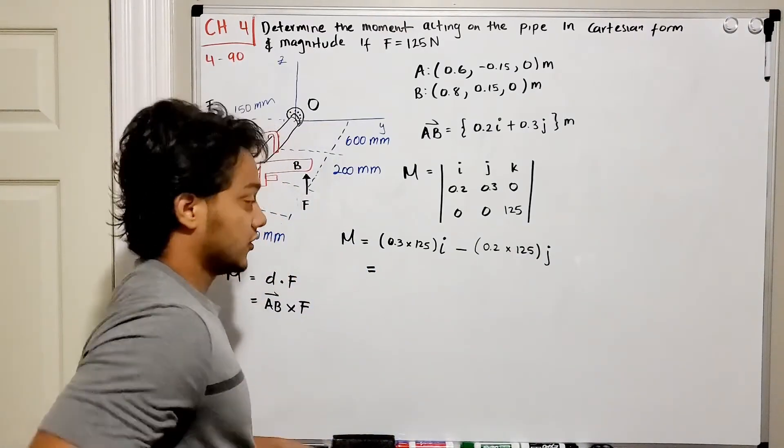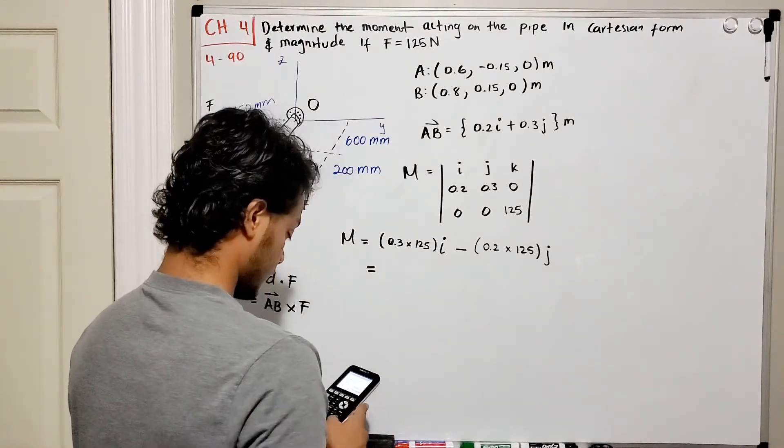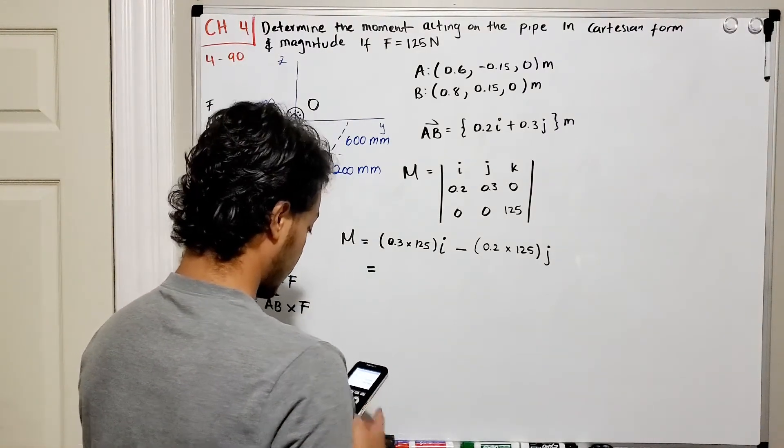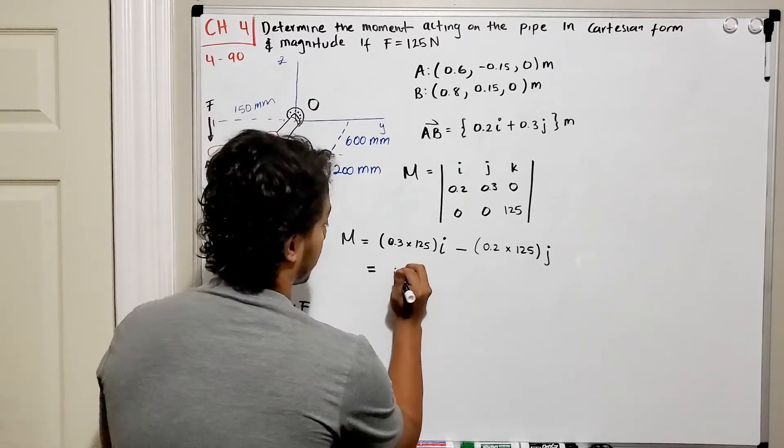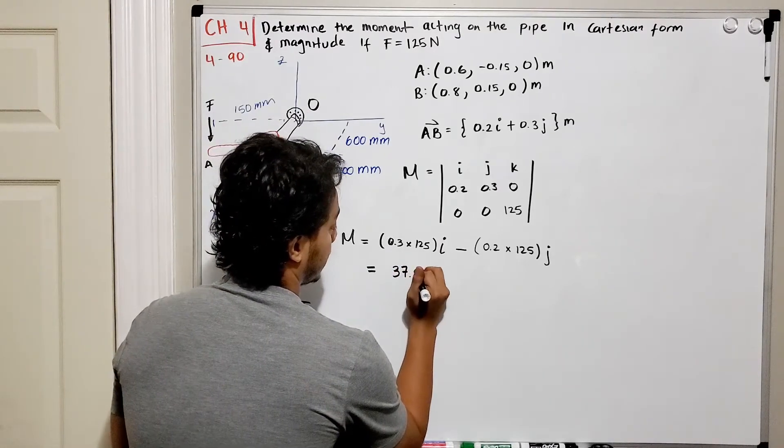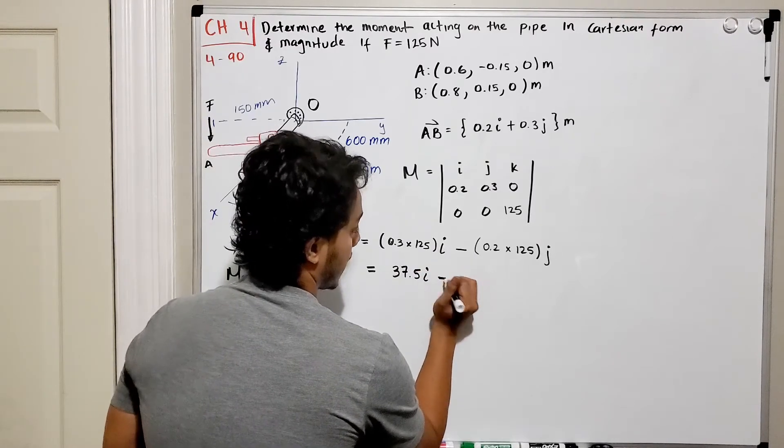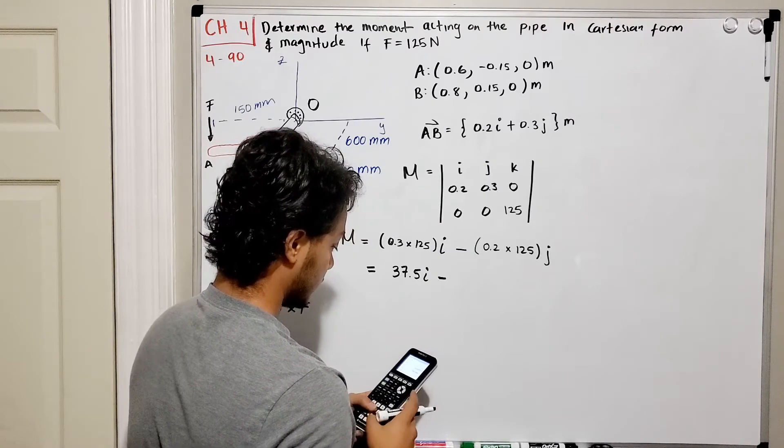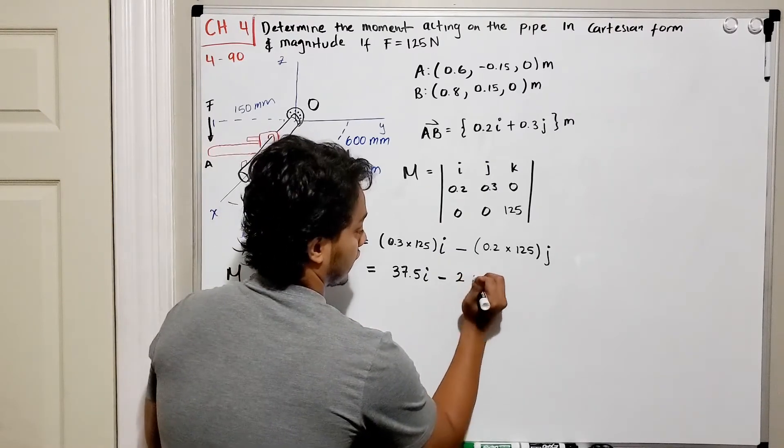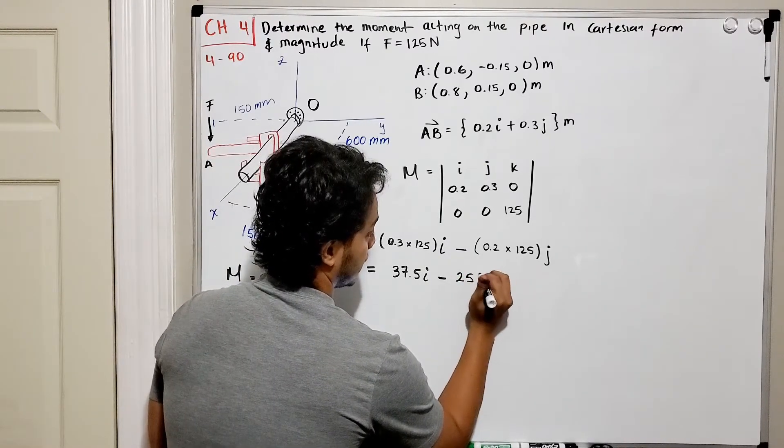So we need to multiply 125 multiplied by 0.3, that gives me 37.5 in the i-direction minus 0.2 multiplied by 125 gives me 25 in the j-direction. So this is my moment in Cartesian form.